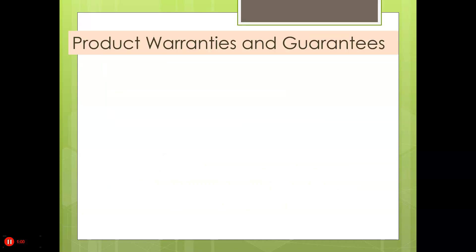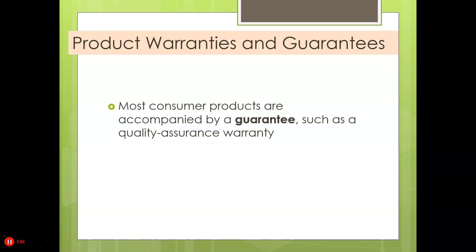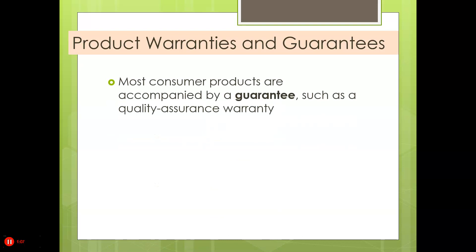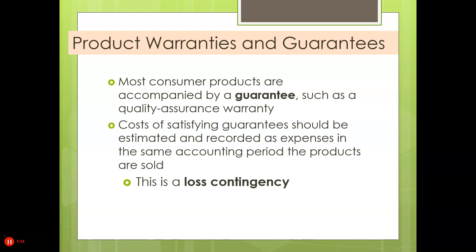An example of a contingent liability is product warranties and guarantees. Most consumer products are accompanied by a guarantee, such as a quality assurance warranty. The cost of satisfying guarantees should be estimated and recorded as expense in the same accounting period the products are sold. This is a loss contingency.